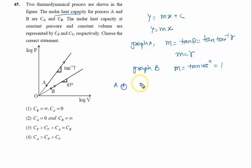For graph A, Y means log P, M means γ equals log V. Further solving, log P = log V^γ, then P = V^γ, or P = 1/V^γ. So PV^γ = constant. This is the process which represents graph A.